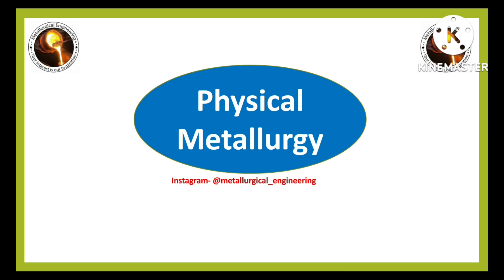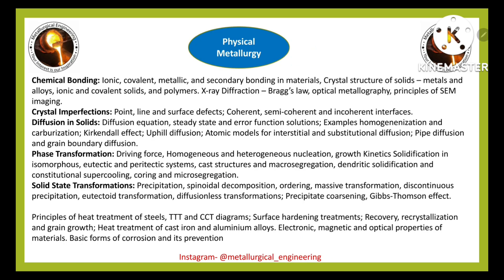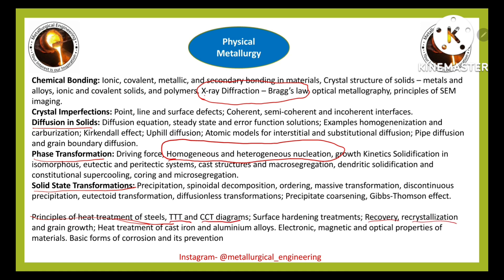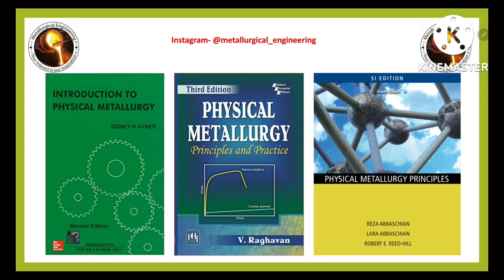The fourth part is physical metallurgy. Its syllabus includes chemical bonding, crystal imperfections, diffusion in solids, phase transformations, solid-state transformations, and heat treatment. You can get numerical problems from X-ray diffraction and from homogeneous and heterogeneous nucleation. Objective-type questions will come from heat treatment of steel, TTT diagrams, CCT diagrams, and recovery, recrystallization, and grain growth.